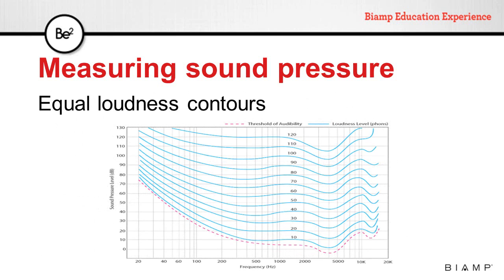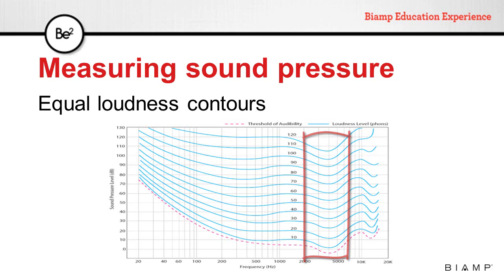The equal loudness contours is a chart originally created as a result of the studies done by Fletcher and Munson. These represent the sound pressure level of pure tones that would be perceived as having equal loudness. Using 1 kHz as a reference level, we can see that the curves dip from 1 kHz to 5 kHz, indicating that the ear is most sensitive to this frequency range. Coincidentally, this happens to be the frequency range of human voice.